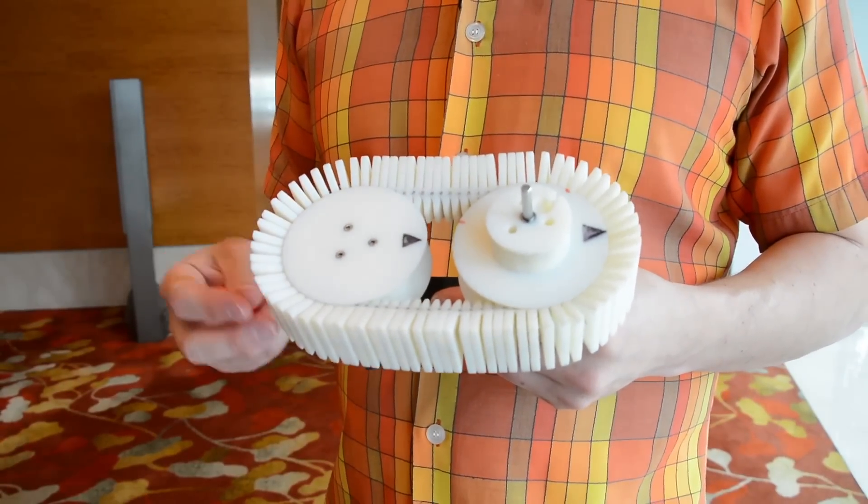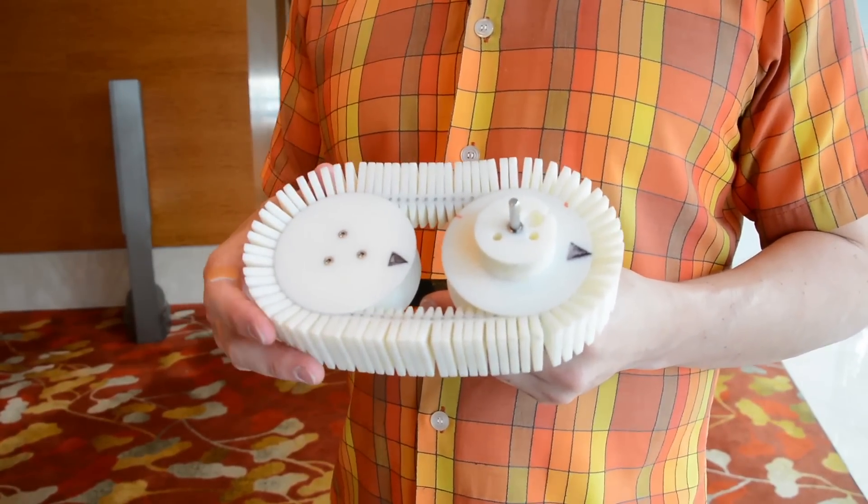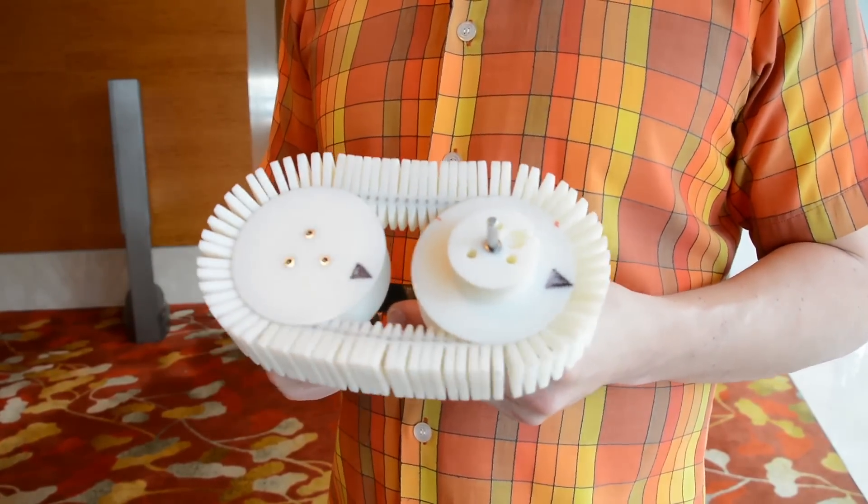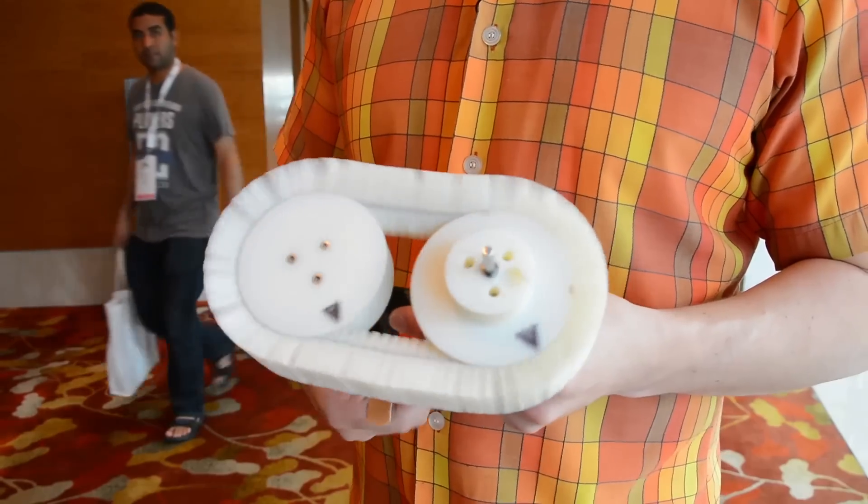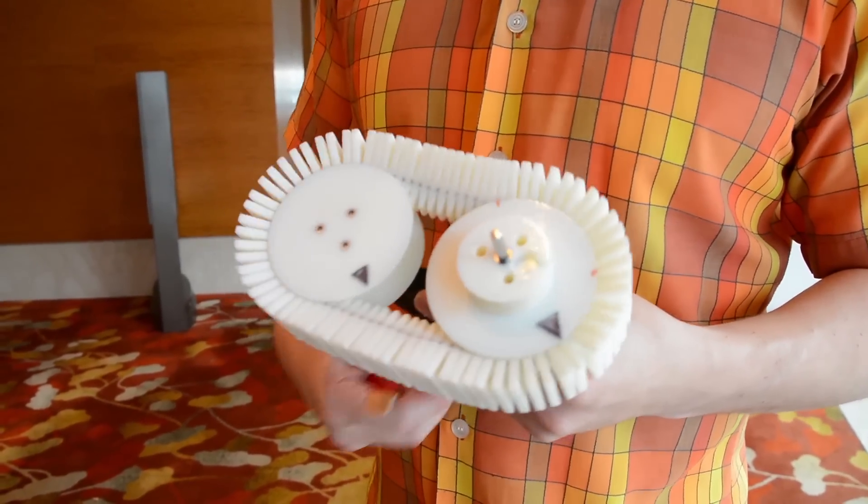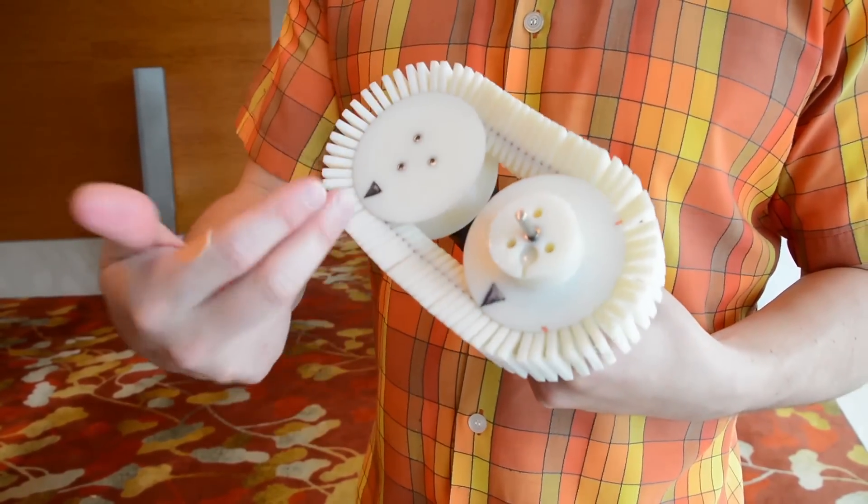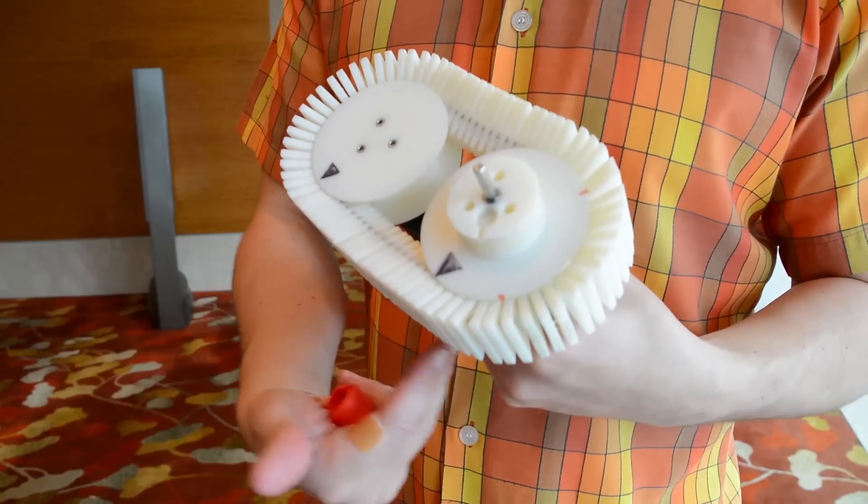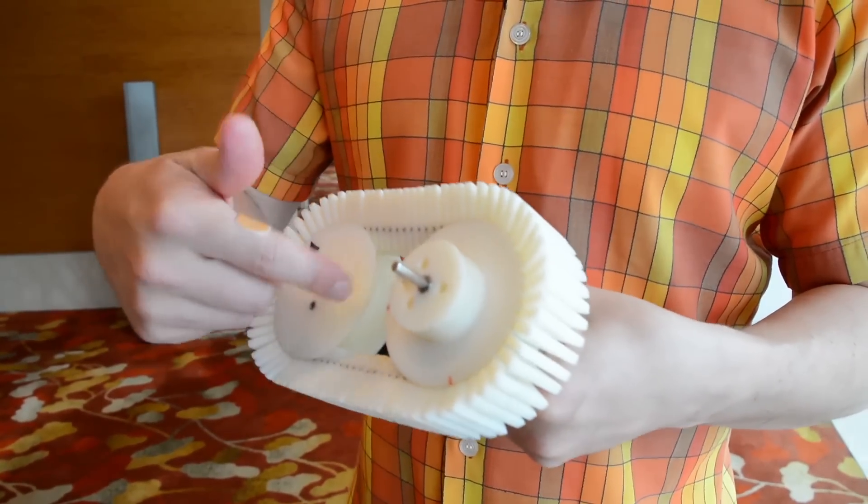The first step is to take a look at a conventional continuously variable transmission, which I have a model of right here. You have a few key components. You have what you call a V-belt, which means if you take a cross-sectional area through the belt, it would be a V-shape. And you have two conical pulleys.